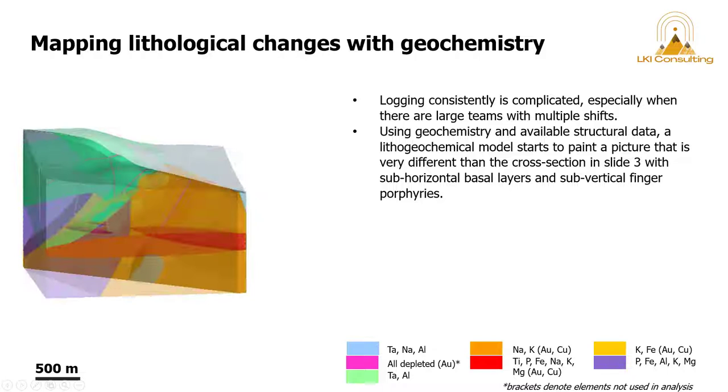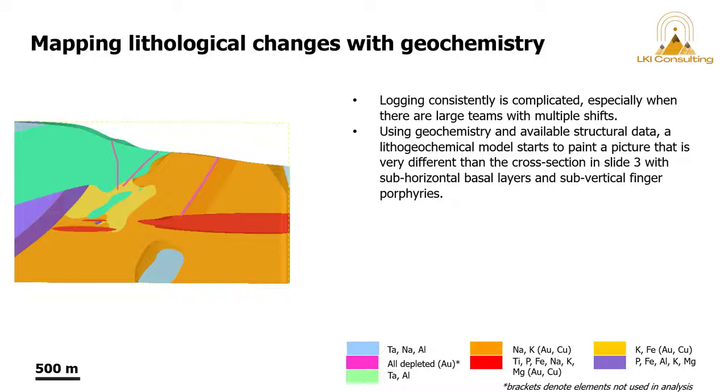Really, I have this in here just to make the point that logging consistently is complicated, especially when there are large chains with multiple shifts and when there's a lack of control on the logging codes. So using geochemistry and the available structural data, a lithogeochemical model can start to paint a picture that is very different than the cross sections slide that we saw in slide 3 with the sub-horizontal basal layers and sub-vertical finger porphyries.